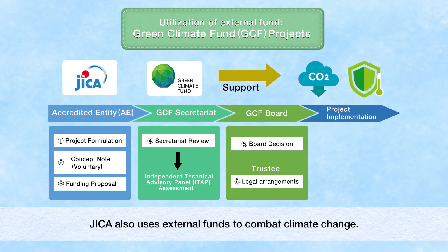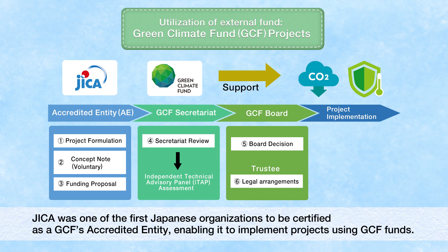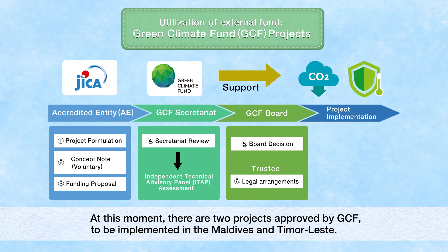JICA also uses external funds to combat climate change. The Green Climate Fund is a multilateral fund that aims to assist developing countries in adaptation and mitigation practices to counter climate change. JICA was one of the first Japanese organizations to be certified as a GCF accredited entity, enabling it to implement projects using GCF funds. Currently, there are two projects approved by GCF to be implemented in the Maldives and Timor-Leste.